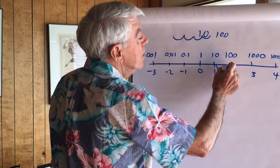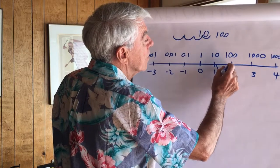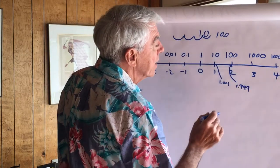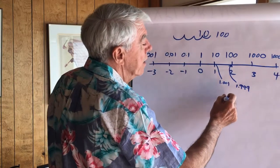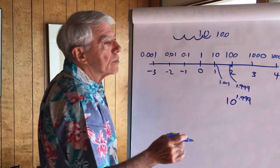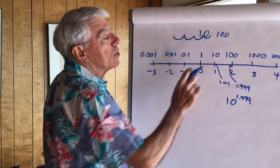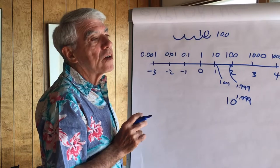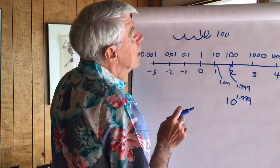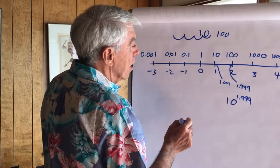What do you imagine that 1.999 as an exponent would be? 10 to the 1.999. What do you imagine that would be? Well, a good guess would be that it's close to 100, very close to 100 and you'd be correct. All right, now let's do something a little harder.